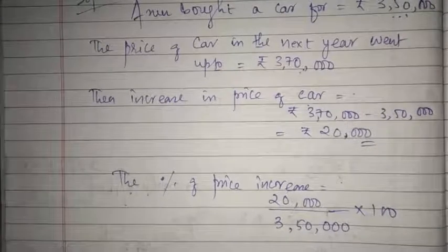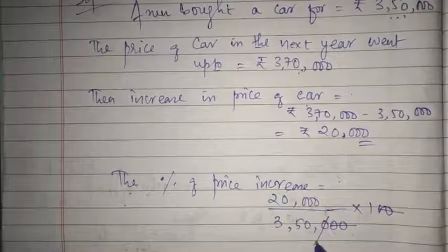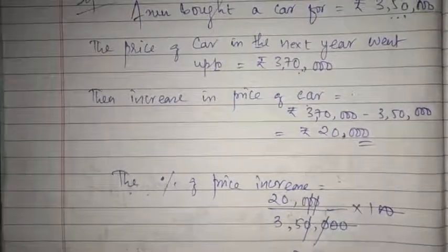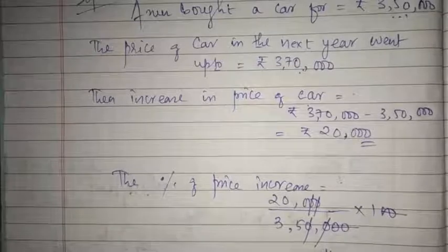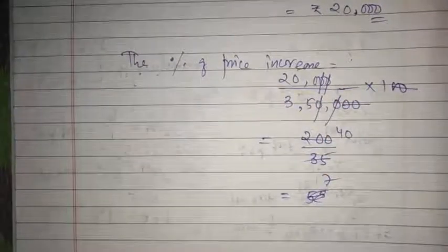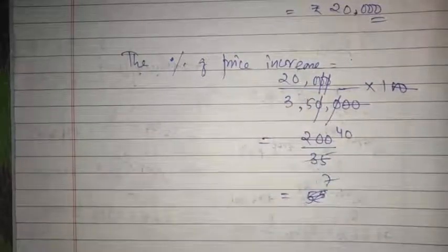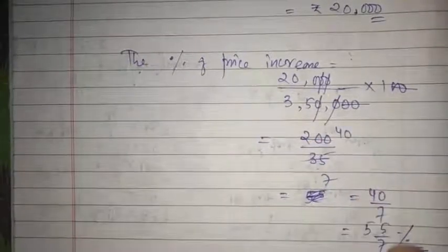After cancelling the zeros from numerator and denominator, we get 200 divided by 35. Dividing further, 200 by 35 gives us 40 by 7 percent, which can also be written as 5 whole 5 by 7, or converted into decimal form. So the percentage of price increase is 40/7 percent.